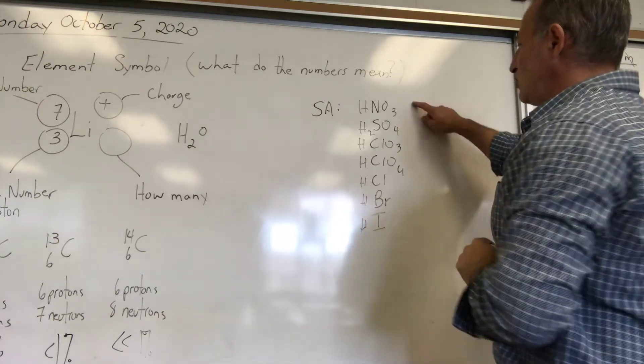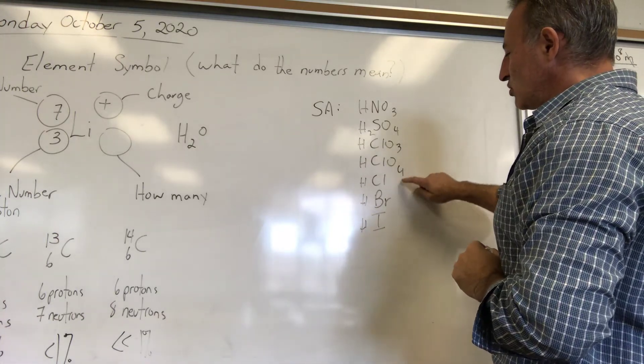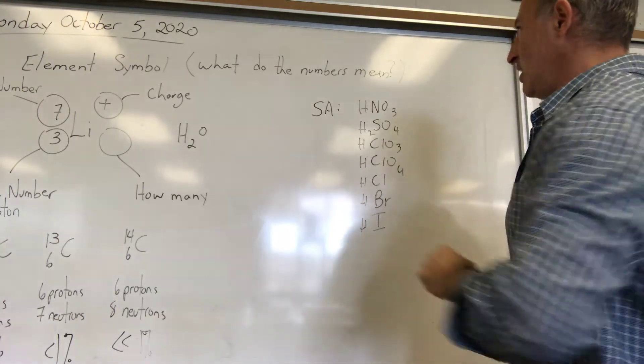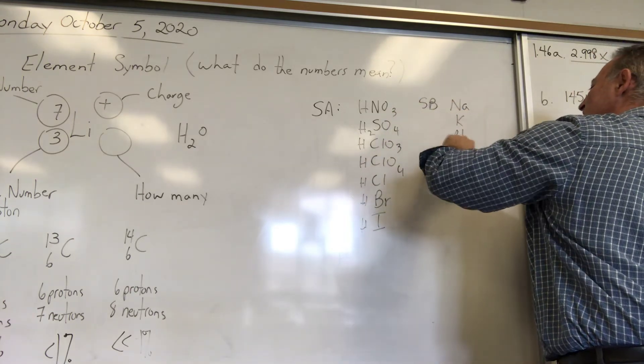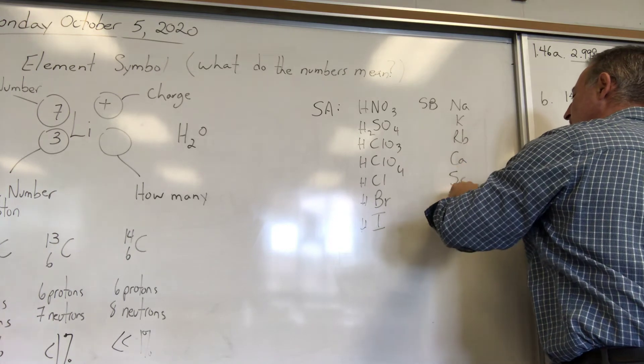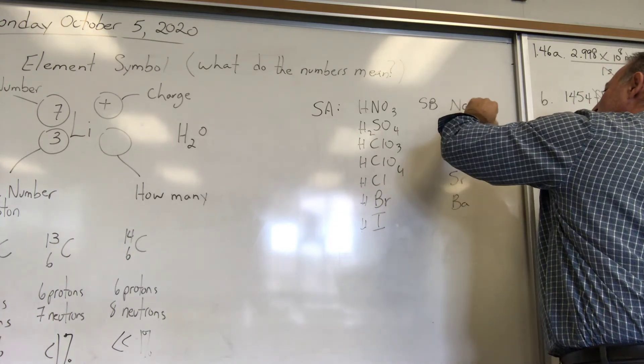So nitric, sulfuric, chloric, perchloric, hydrochloric, hydrobromic acid. For the strong bases, it goes: Na K Rb Ca Sr Ba, and you put OH after each one.